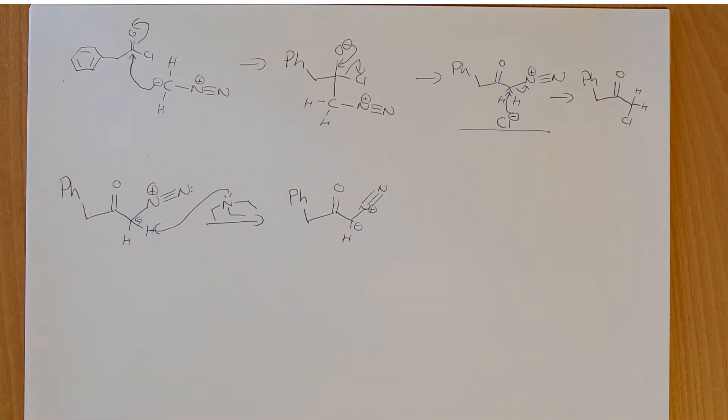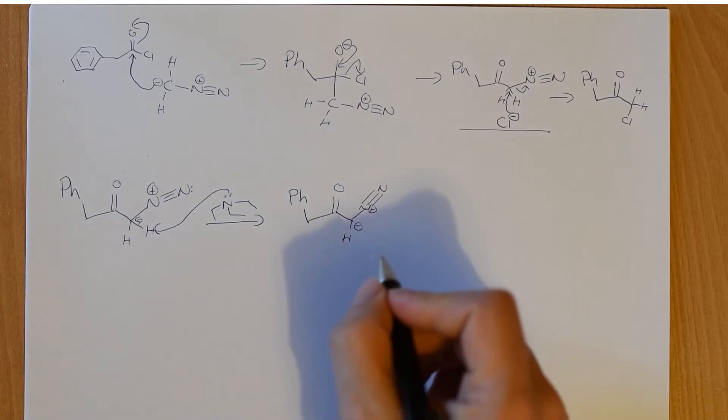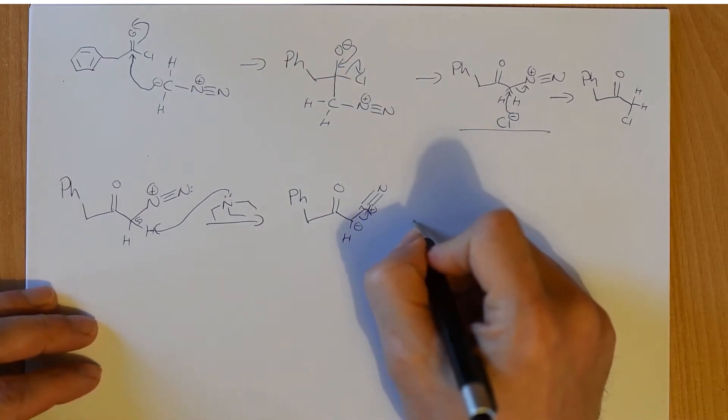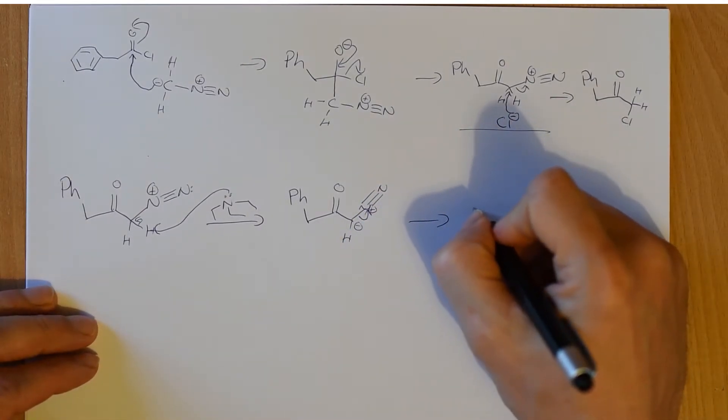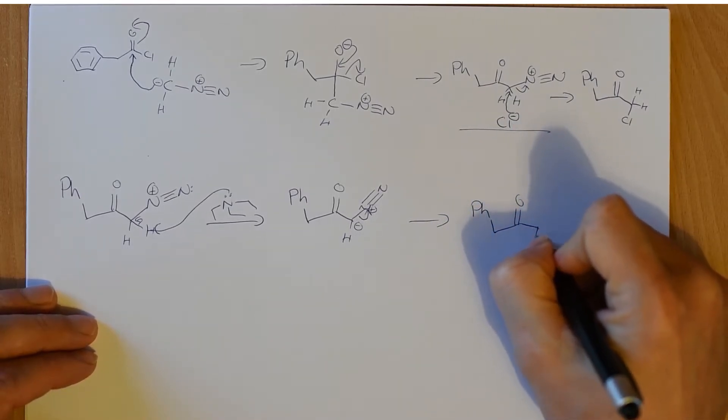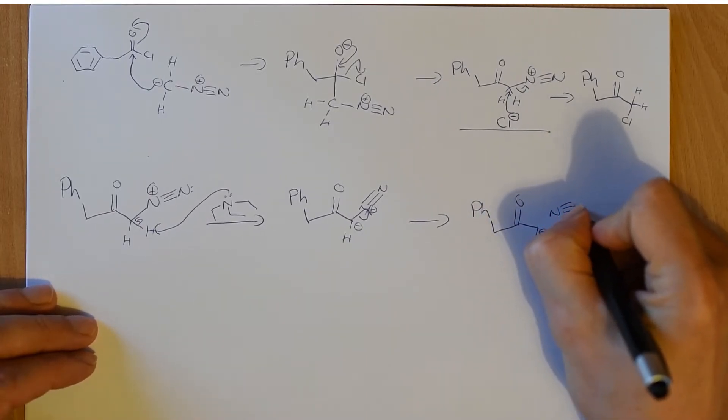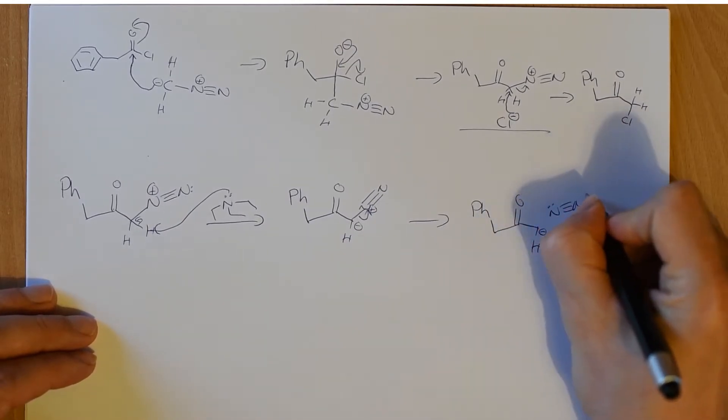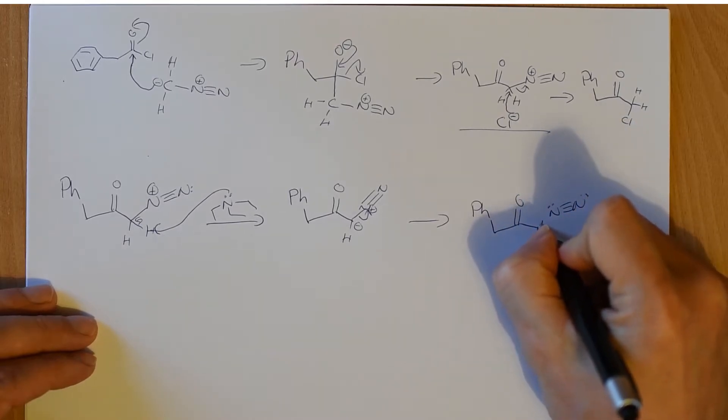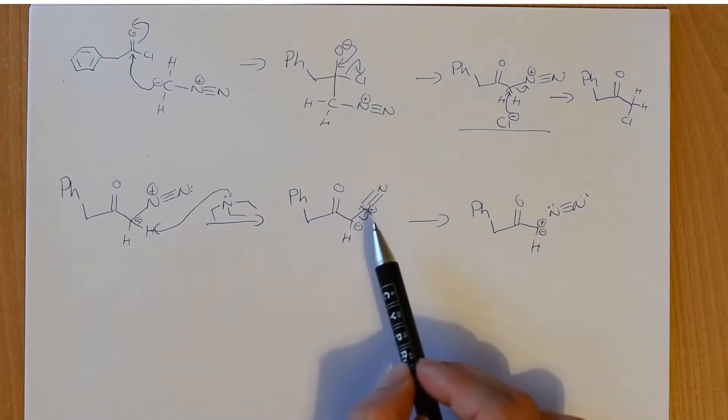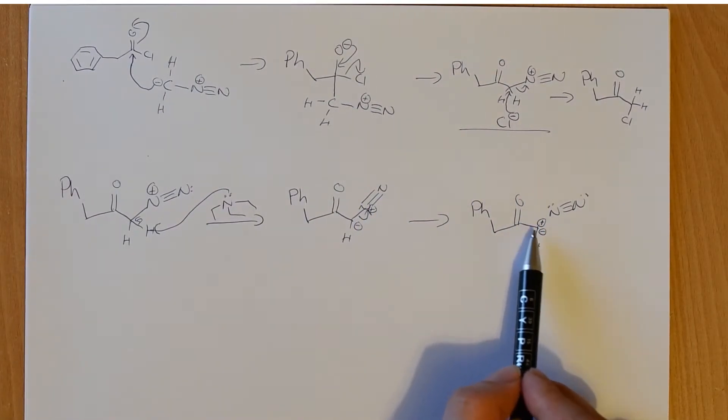But if you heat this up at all, it will start to decompose. And when it does decompose, this nitrogen is going to want to leave with that pair of electrons. Because when it does, if we think about that nitrogen and draw out everything else exactly as it was, this has a negative charge, and this nitrogen had a bond here, had a positive charge, has taken those two electrons. So we've made nitrogen gas, and this carbon now should have a positive charge because it's now given up a pair of electrons that it was sharing, but it also has a negative charge. So what's actually going on here?